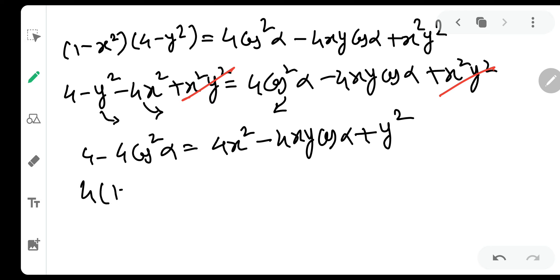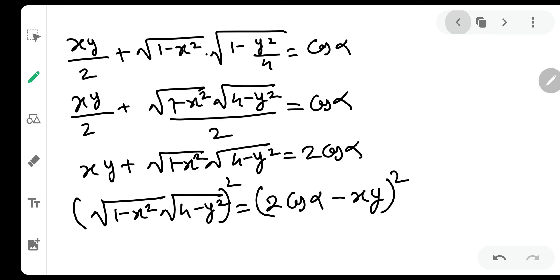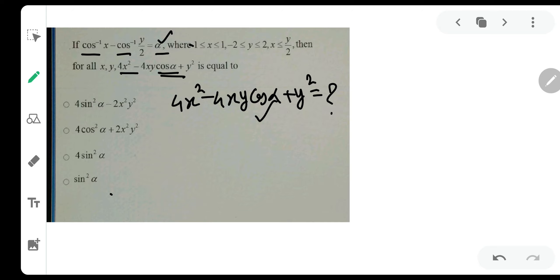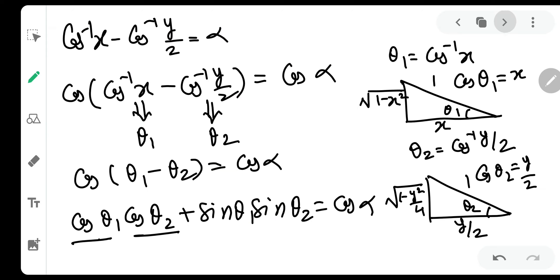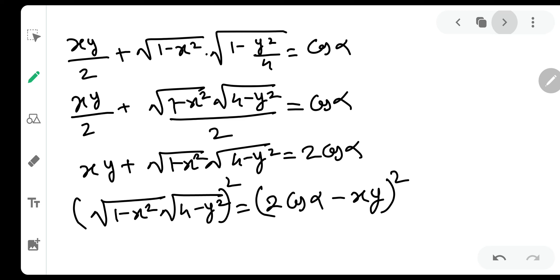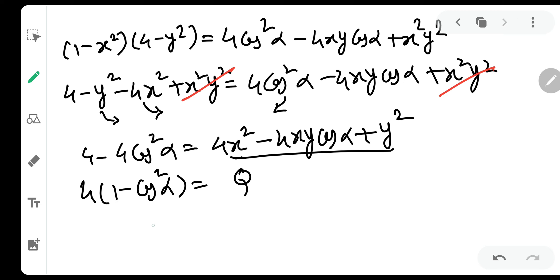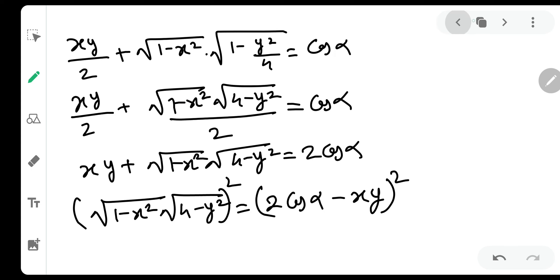So over here, 4 taken common, 1 minus cos square alpha. And what is this? Let us check what they had asked. 4x square minus 4xy cos alpha plus y square. Exactly the same thing which they had asked us. So let me call this Q for question and 1 minus cos square alpha is sine square alpha. So this will be 4 sine square alpha. So the answer to this question is 4 sine square alpha.